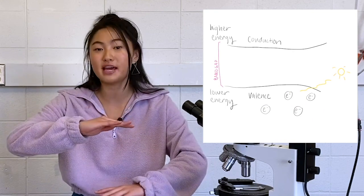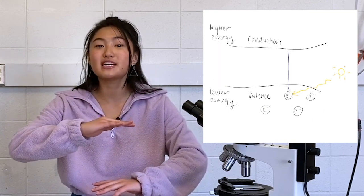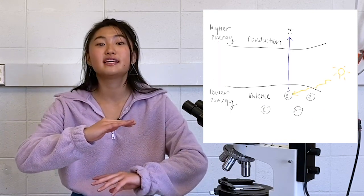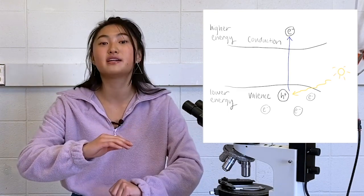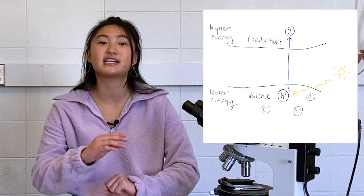However, they can gain energy by absorbing light photons, for example, and be excited to the conduction band. When they're excited, they leave a positively charged hole in the spot originally occupied and the excited electron has a net negative charge.